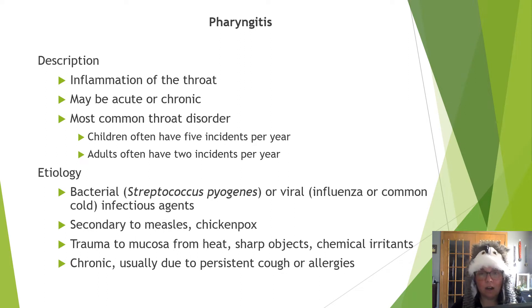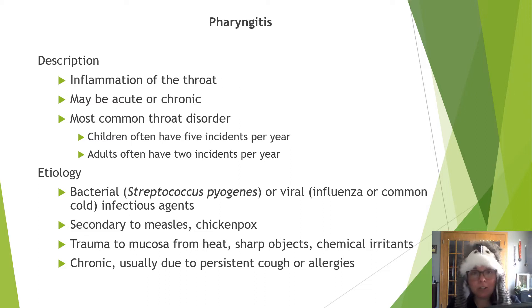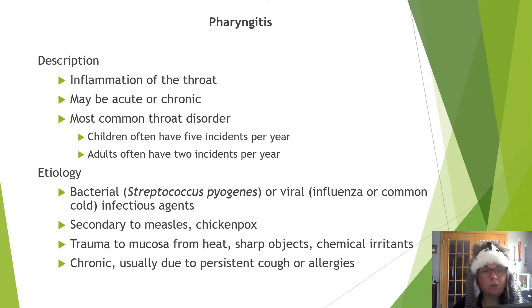Now we travel further down to the pharynx — pharyngitis, an inflamed throat. Acute or chronic cases do occur. It's the most common throat disorder where children often have about five incidents a year and adults about two per year. Etiology includes the bacteria streptococcus pyogenes, or virally like influenza, the common cold, or rhinovirus. Pharyngitis can arise secondarily to other diseases like measles or chickenpox, and also from trauma to the mucosa from heat, sharp objects, or chemical irritants.